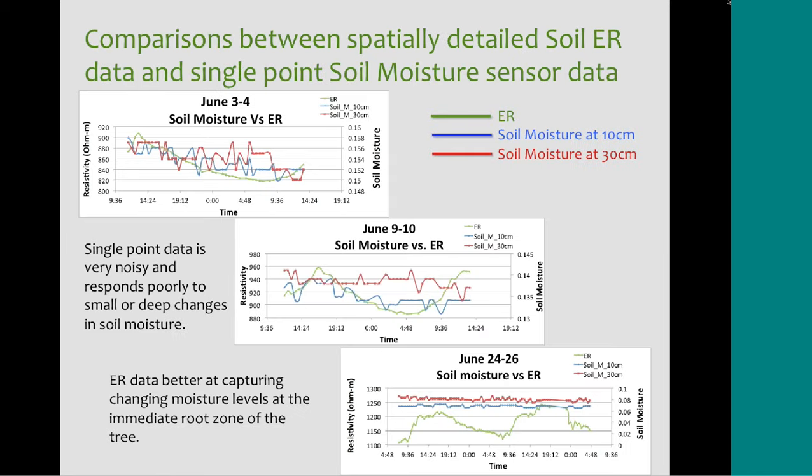There were also soil moisture sensors in the area, but they're single-point sensors that only measure resistivity at the specific point they're placed — one at 10 centimeters and one at 30 centimeters. We compared that data to our electrical resistivity data to see if they correlated. The soil moisture sensor data is a lot noisier than our electrical resistivity data, which supports that electrical resistivity is much better at detecting smaller and deeper changes in soil moisture, especially around the root zone of the tree.